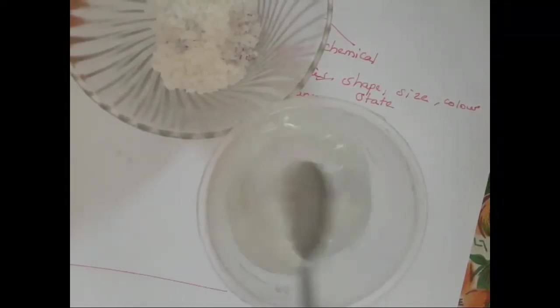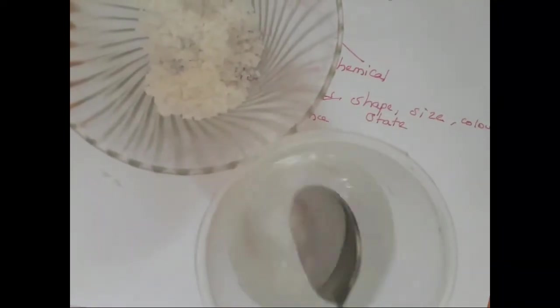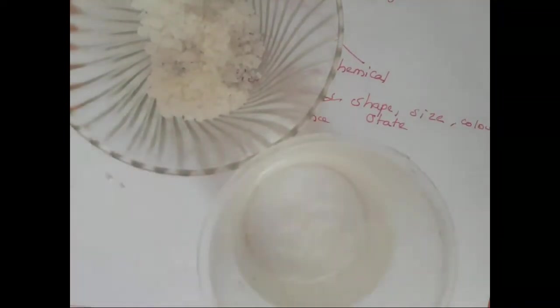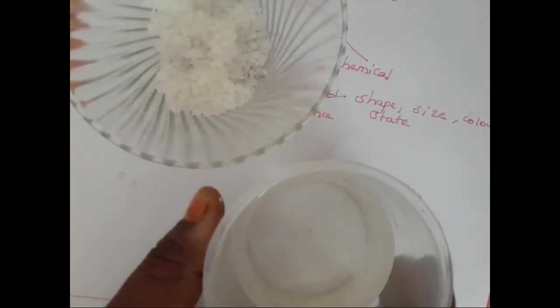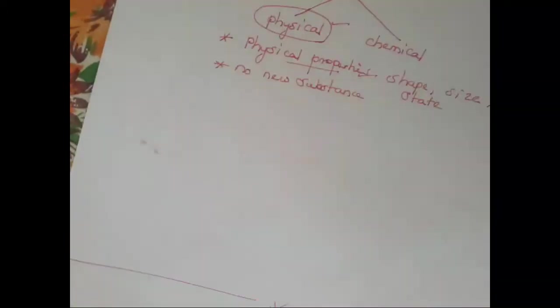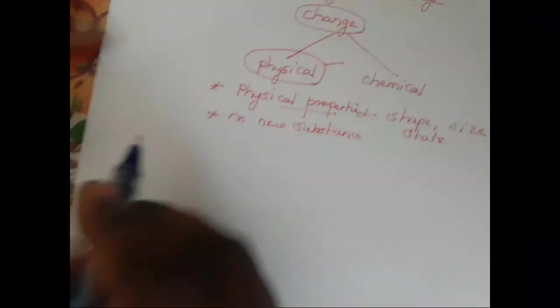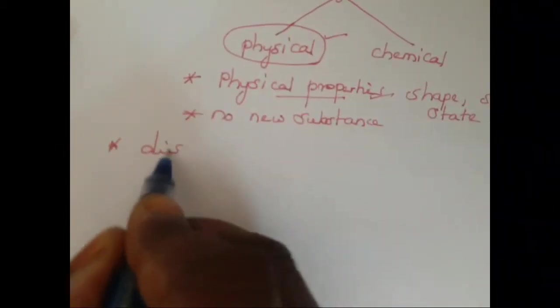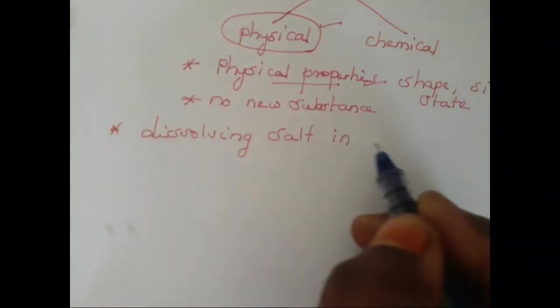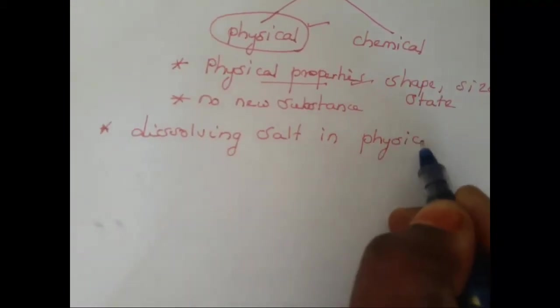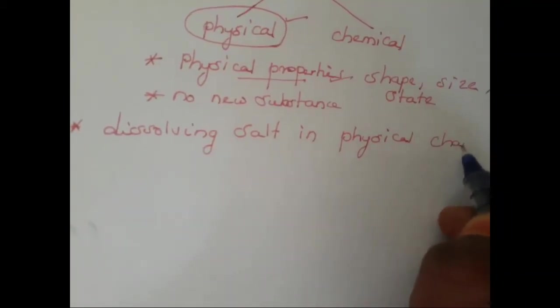Now my question is: will this salt undergo a change? Yes, it is undergoing a change. But when I heat this salt water again, I will get back the salt through the evaporation process. It means that under this experiment, no new substance is formed — we are getting back the salt again. So the salt has undergone a physical change. Dissolving salt in water is a physical change because we can get back the salt by evaporation.